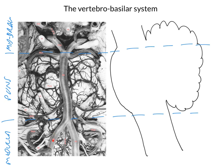Here we've got the vertebral arteries ascending. We've got the anterior spinal artery that comes off the vertebrals. We've got the posterior inferior cerebellar arteries coming off the vertebrals. We've got the anterior inferior cerebellar arteries coming off the basilar. We've got these multitudinous pontine branches coming off the basilar supplying the pons. We've got the posterior cerebellar artery, with the basilar bifurcating into the posterior cerebral arteries.